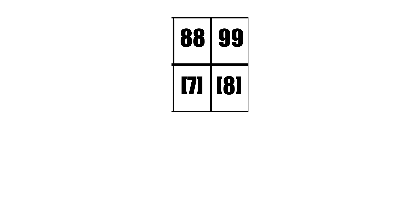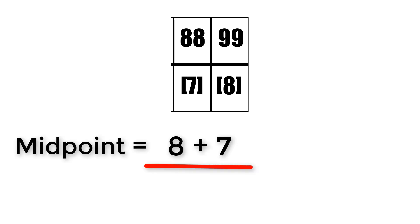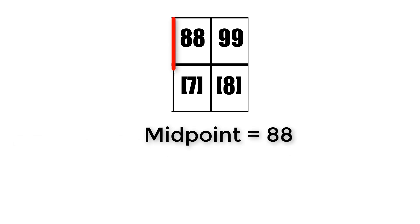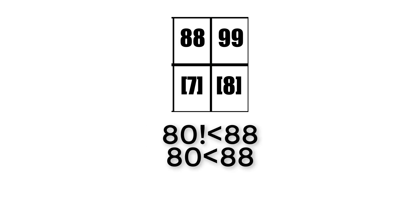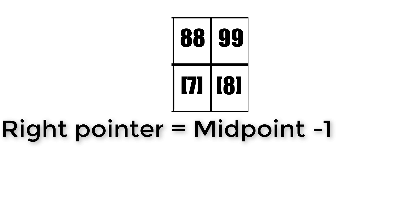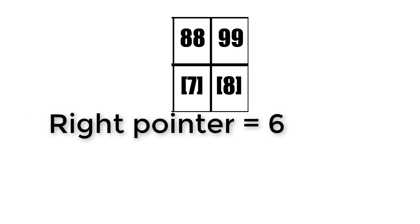We need to calculate a new midpoint: 8 plus 7 over 2, because it's the rightmost value plus the leftmost value over 2. This equals 7.5, which becomes 7 due to integer division. The midpoint is 88 because that's in the index of 7. 88 does not equal 80, and 80 is less than 88. Since 80 is less than 88, we subtract 1 from the midpoint to get the new rightmost value: 7 minus 1 equals 6.